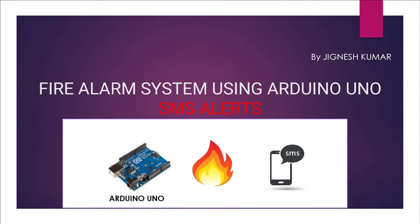Welcome everyone to a new IoT tutorial. In this tutorial I am going to discuss a fire alarm system using Arduino Uno with SMS alerts. For SMS alerts we are using the SIM900 GSM module. This is an Arduino-based project in which we are using various sensors including the MQ2 smoke sensor, the flame sensor, buzzer, LEDs, and the LCD display.